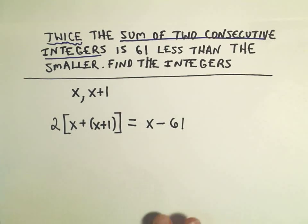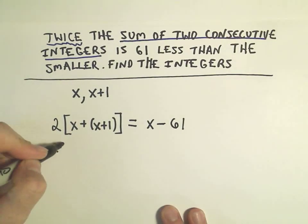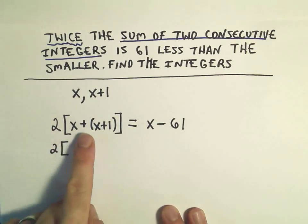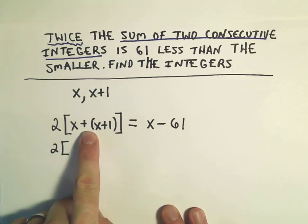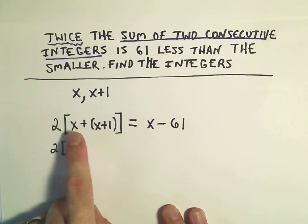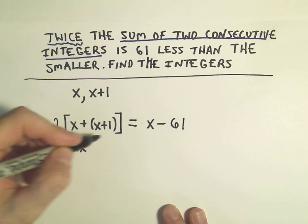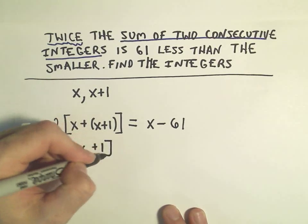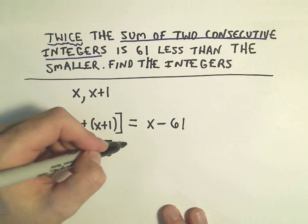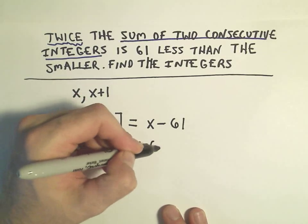Now it's a matter of just doing the algebra and trying to simplify this down. You can imagine there's a plus 1 in front of the parentheses. If you distribute that, it would just get rid of the parentheses. We would then have a 1x plus a 1x, which would be 2x. We would still have our plus 1 left over. On the right side we have x minus 61.